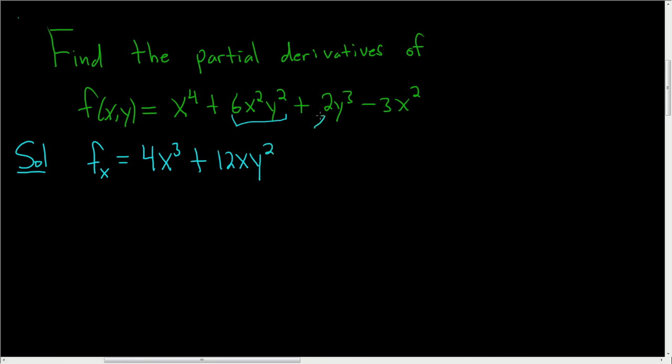Here we're treating this as constant, so the derivative is 0. And for the last piece, we bring the 2 down, so we get minus 6x. So that's the first partial derivative with respect to x.